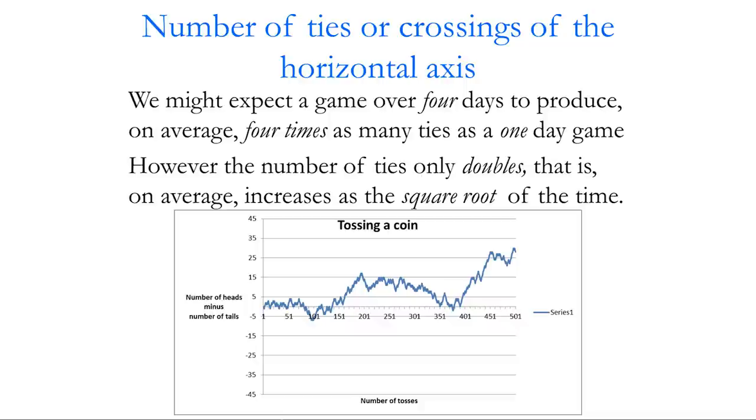From William Feller's famous introduction to probability: suppose that in a learning experiment lasting one year a child was consistently lagging except perhaps during the final week, and another child was consistently ahead except perhaps during the last week. Would the two children be judged equal? If the outcome were just due to chance — like a coin toss — and a group of 11 children were exposed to it, one among the 11 would appear as leader for all but a week and another as laggard for all but a week.